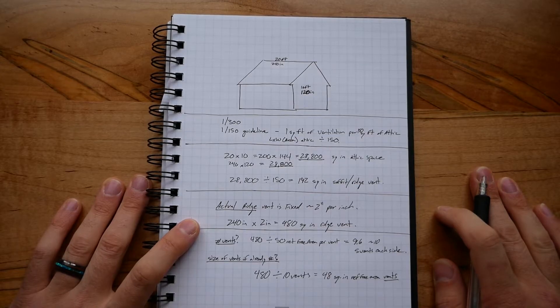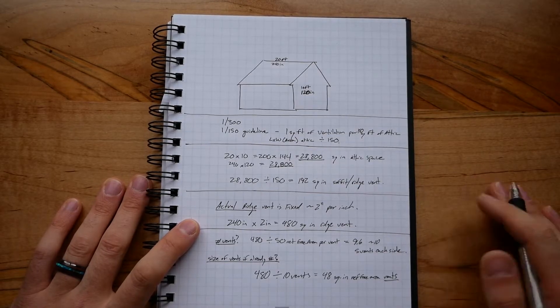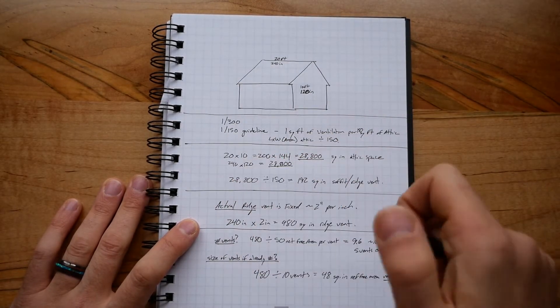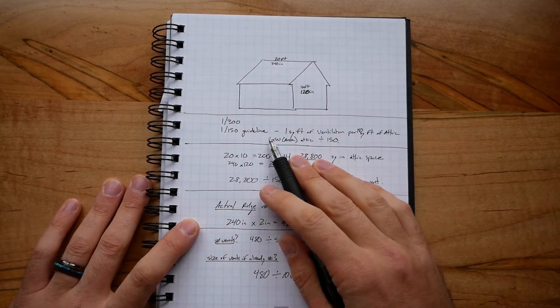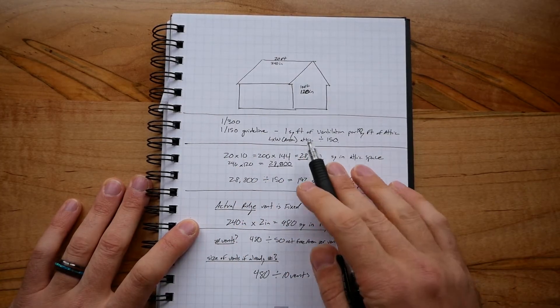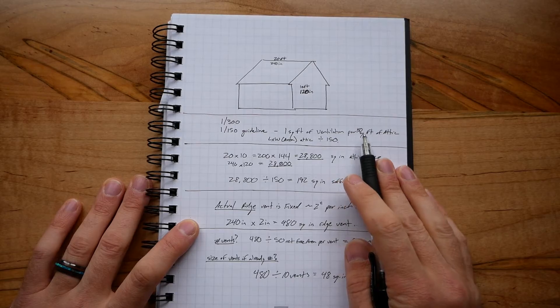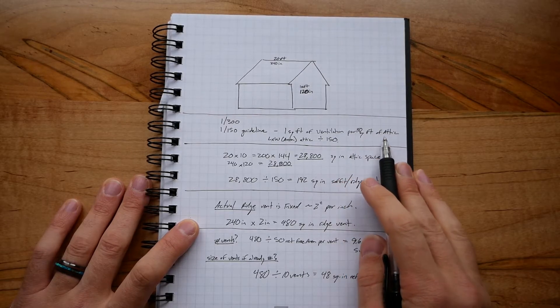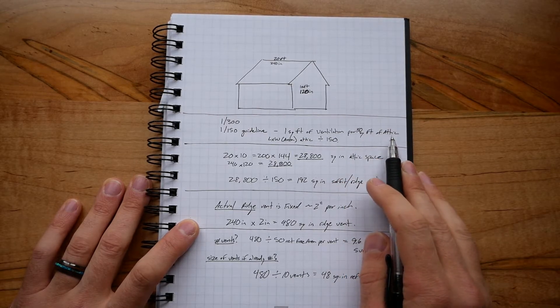There are actually some guidelines in the industry. There's a 1 to 300 and then the more recommended 1 to 500 guideline, and that basically means you want one square foot of ventilation per 150 square feet of attic space or attic area.